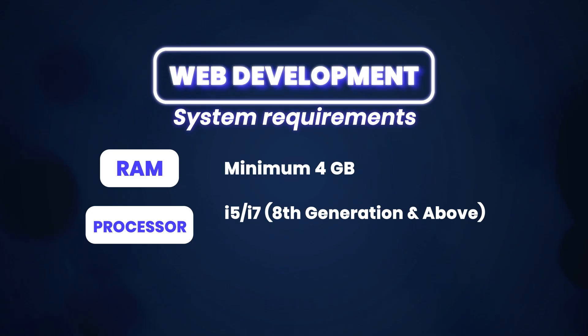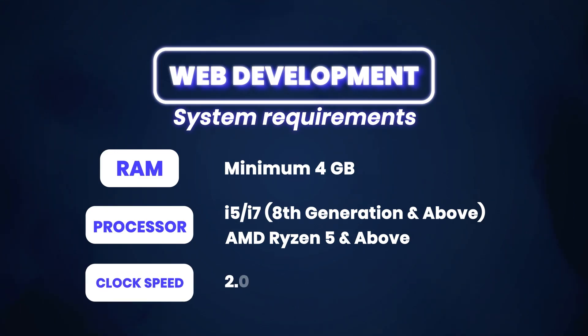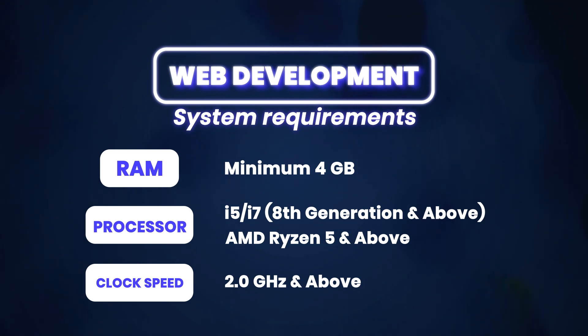You can select the processing speed above 8th generation. For example, you can select AMD Ryzen 5. For clock speed, you can select 2GHz. You can select this processor and use it very efficiently.